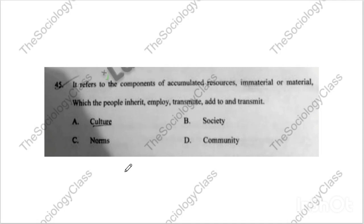Question number forty-five: 'It refers to the component of accumulated resources — material or immaterial — which people inherit, employ, transmute, add to, and transmit.' Options: culture, society, norm, community. The correct answer is A — culture.